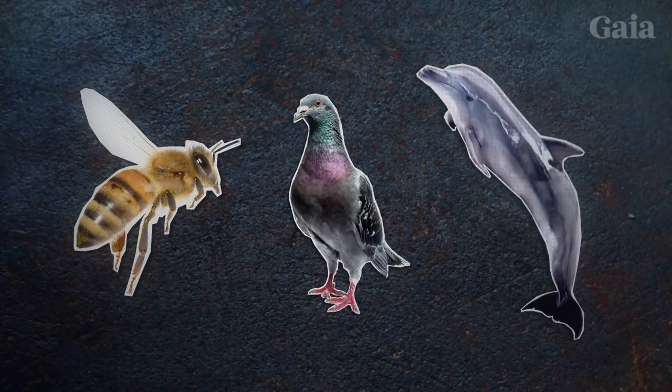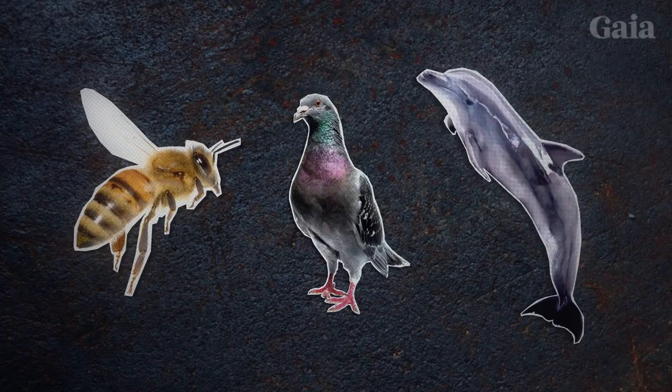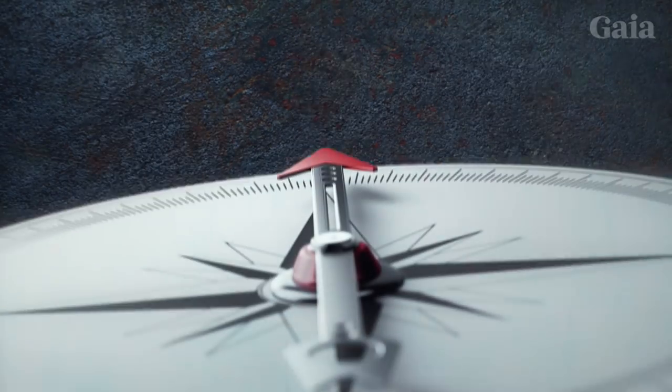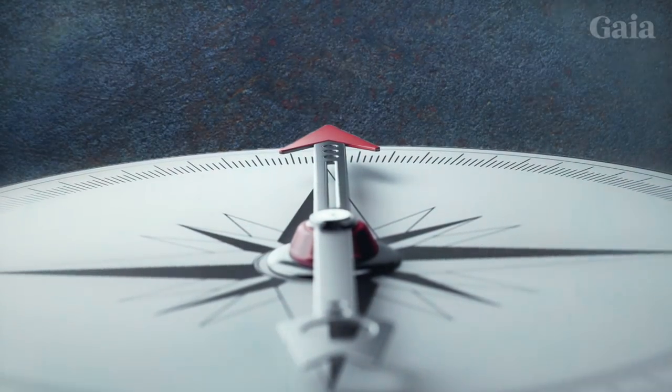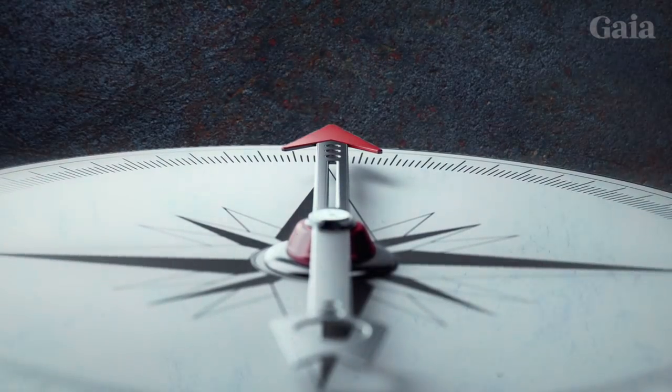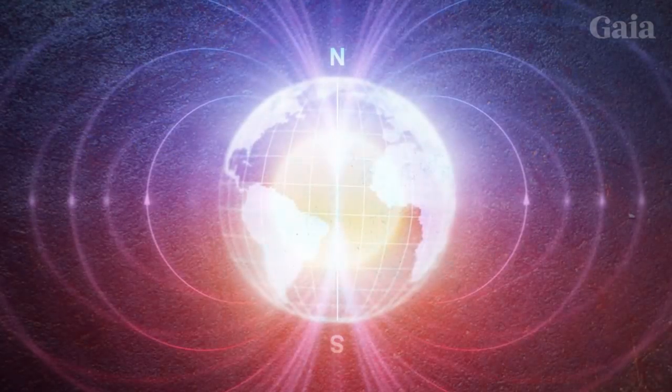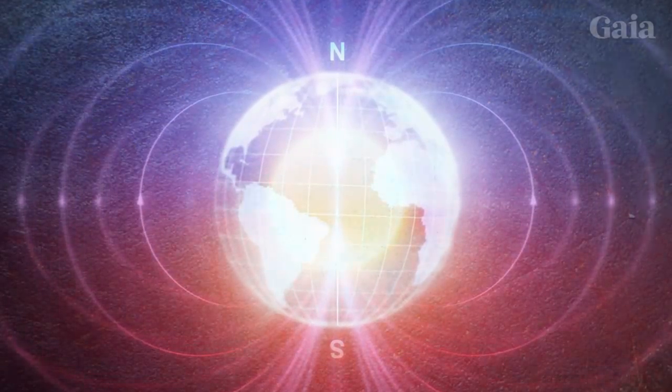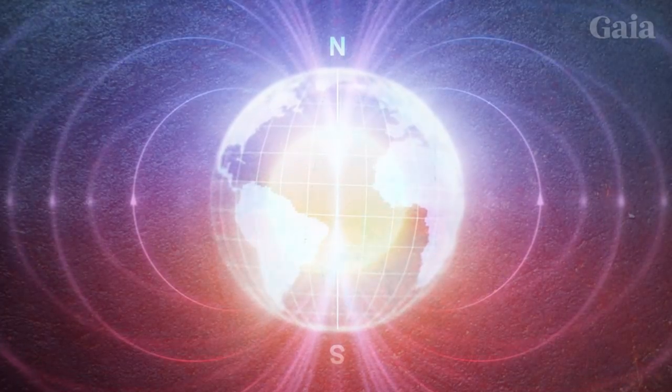In animals, like honeybees, homing pigeons, and dolphins, magnetite is believed to be associated with the ability to navigate based on the Earth's magnetic field. While similar studies have yet to be performed on humans, we do know that Earth's magnetic fields affect everything from our mood to our ability to learn.